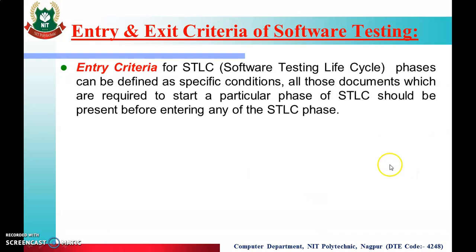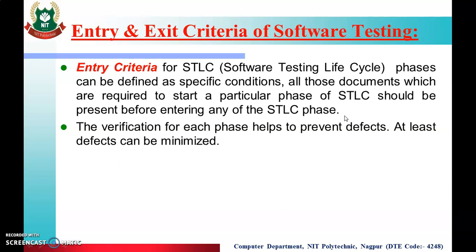Next are Entry and Exit Criteria. If we perform software testing, we need to have a proper time for it. Entry criteria for STLC — that means Software Testing Life Cycle phases — can be defined as specific conditions. When we enter for software testing, we have to satisfy some conditions. All documents required to start a particular phase of STLC should be present before entering any STLC phase. Verification for each phase helps to prevent and minimize defects.